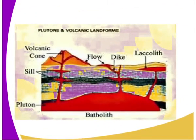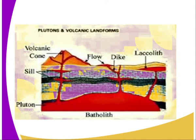The intrusive landforms that we have include the sill, the pluton, the dykes, the laccolith, and the batholith. There are also a number of other features that are formed as intrusive features, which you can be able to see.